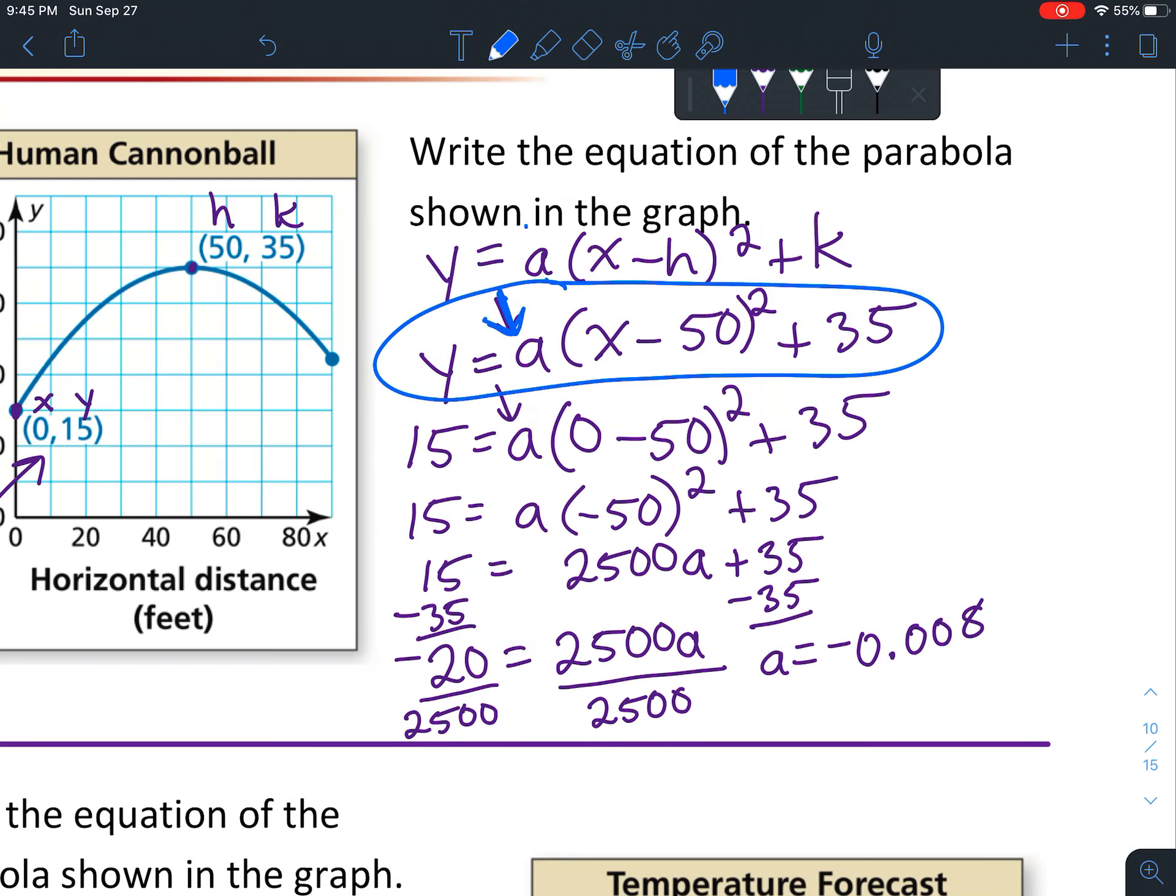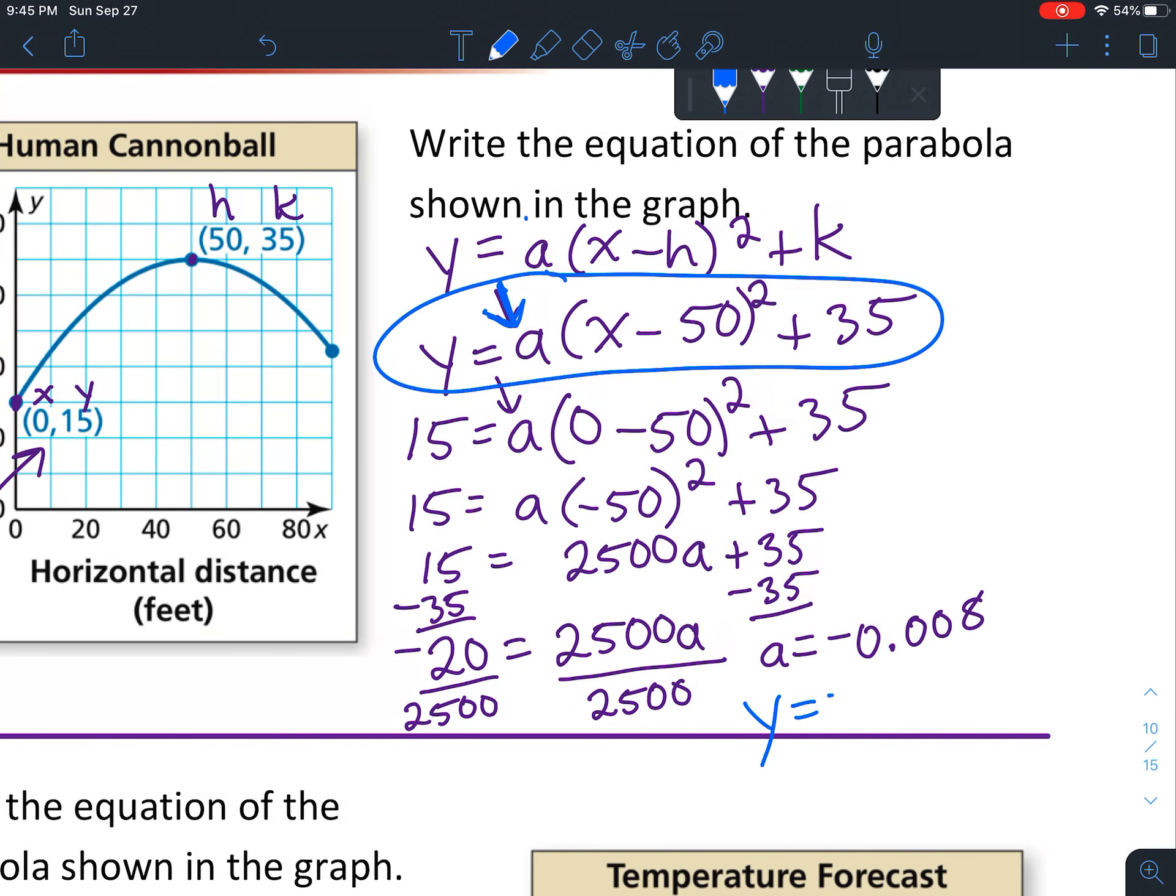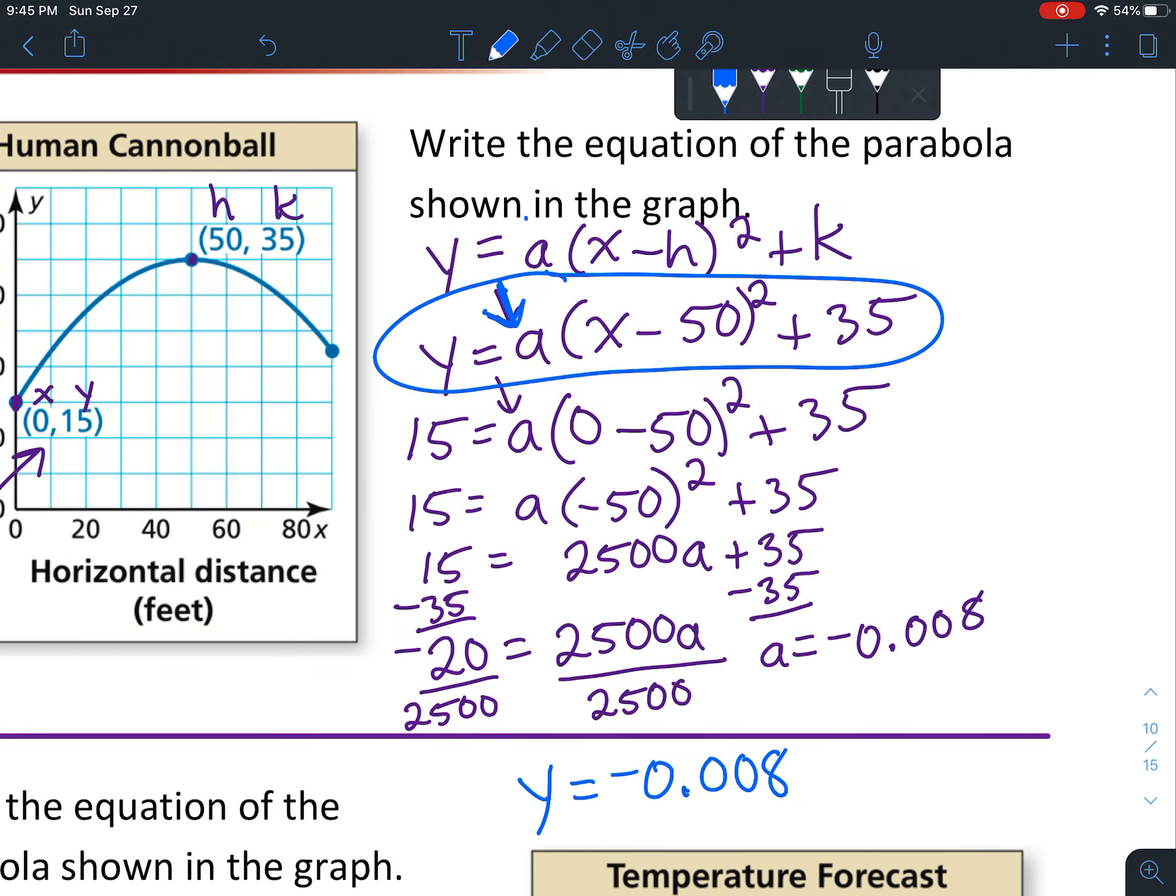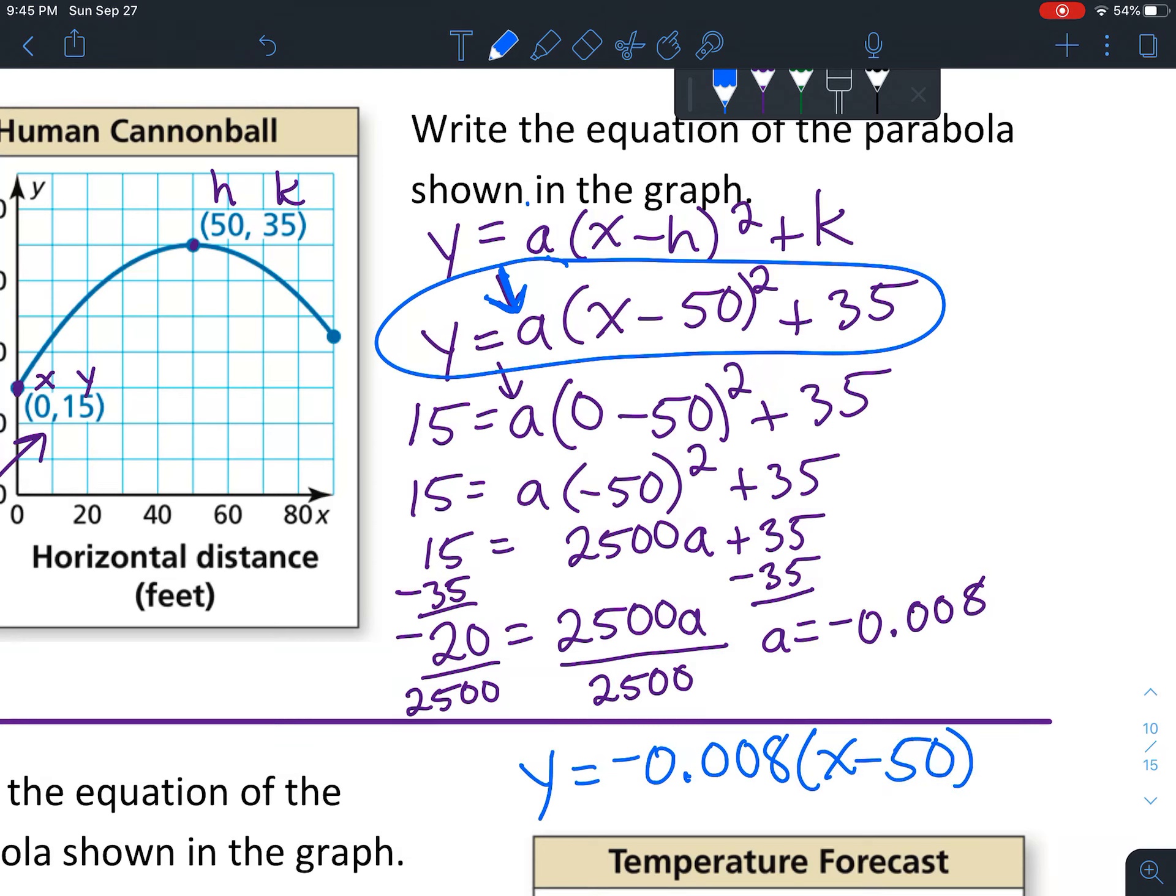We're going to replace a this time, leaving x and y as they are. So y = -0.008(x - 50)² + 35. That's our equation that would work for any input of x to get a specific y.